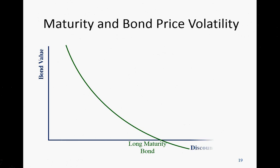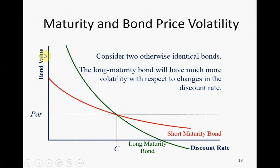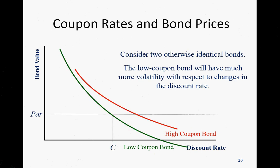Here is the bond value versus the discount rate chart. The green curve is for long-maturity bonds and the red curve is for short-term bonds. The green one is steeper, meaning for a small change in discount rate, the bond price changes by a larger amount — so it's more sensitive. Comparing high coupon versus low coupon bonds: the low coupon curve is steeper and the high coupon bond is flatter, meaning a flatter curve indicates less sensitivity to discount rate changes.